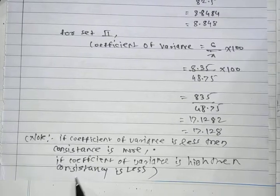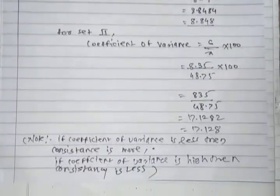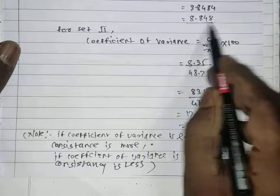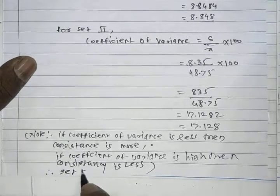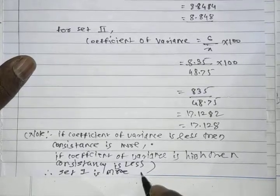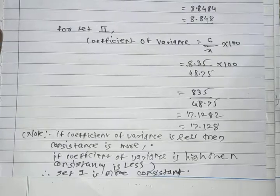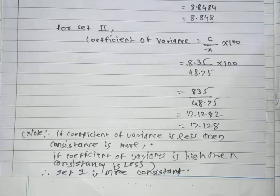The coefficient of variance for Set 1 is 8.848 and for Set 2 it is 17.128. Since Set 1 has the lower coefficient of variance compared to Set 2, therefore Set 1 is more consistent. You observe and decide which set is more consistent on the basis of coefficient of variance.